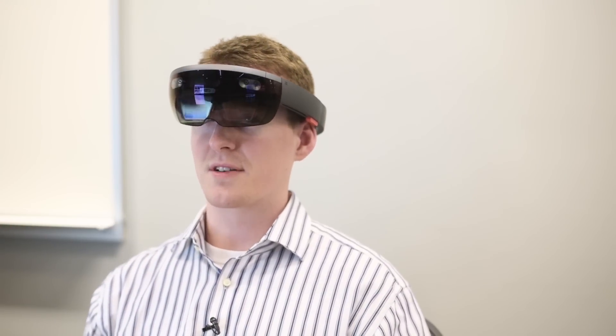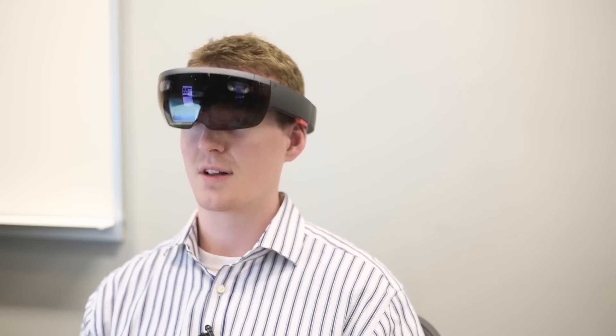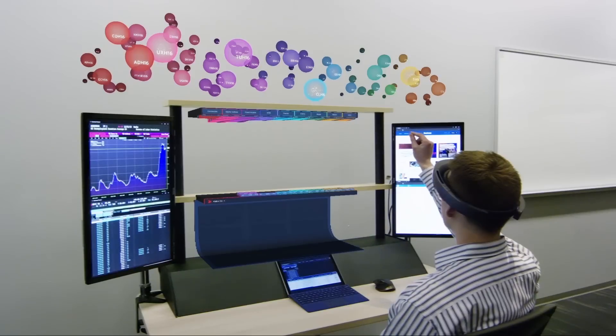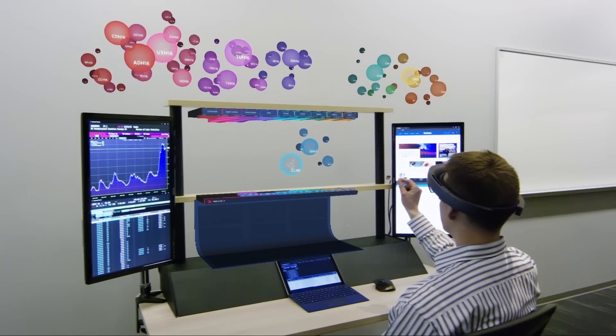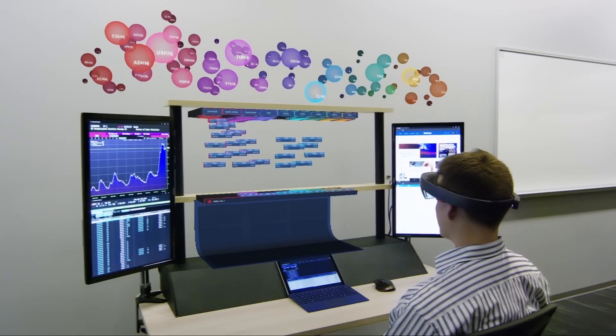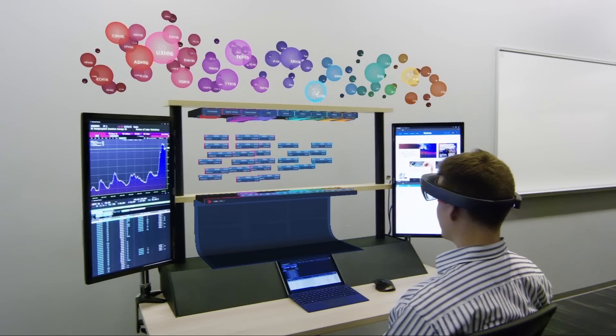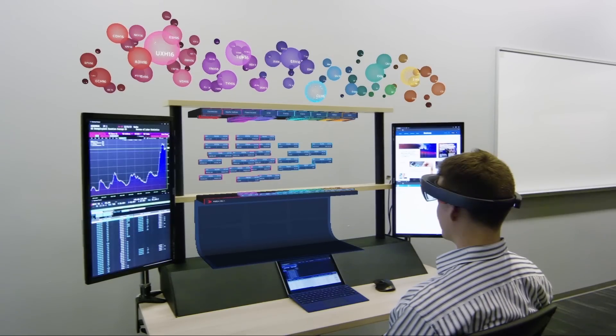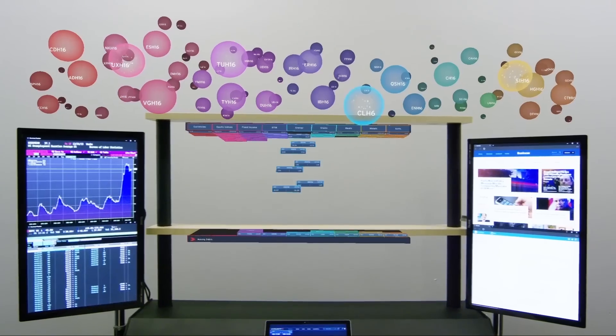There's strong volume across energy, but crude is especially heavy. Look here. Price tile tabs representing all of the individual futures within the energy asset class are displayed three-dimensionally in front of Jason and simultaneously viewed by Dan.